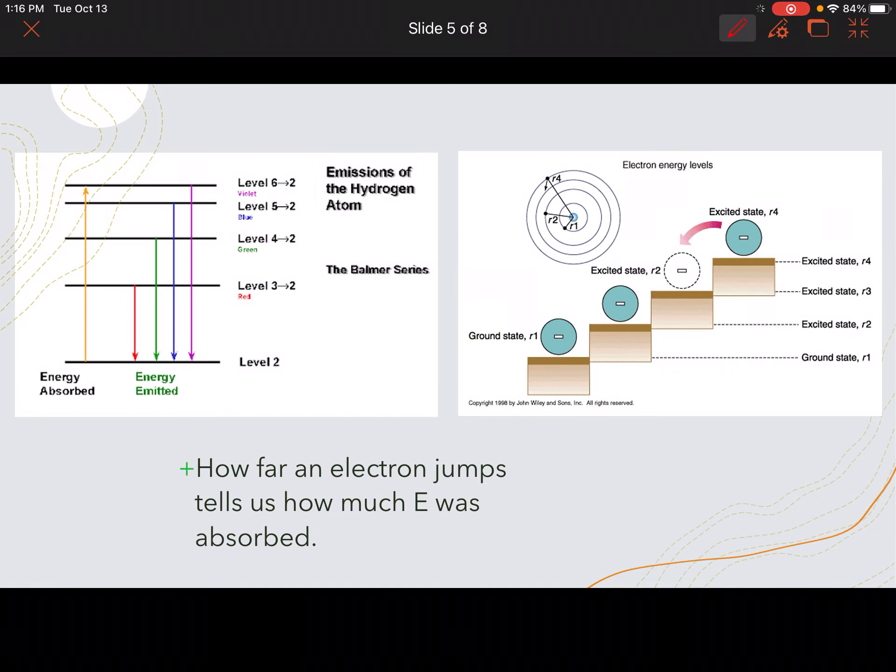Now, how far an electron jumps tells us how much energy was absorbed. So we've got this sort of staircase model here. So this is our ground state here. And so the electron can jump, depending on how much energy is absorbed, it can jump to one of these. And then once they're in their excited states, when they fall back down to their ground states, they release certain frequencies. So if we look here, the other diagram maybe explains that better.